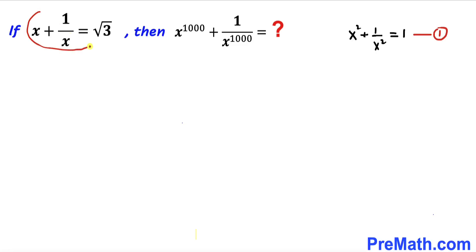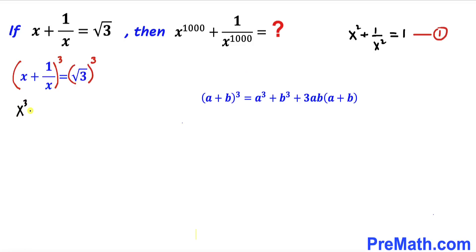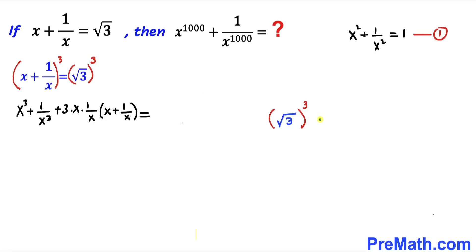Now let's focus on the first equation once again. This time we are going to take the cube on both sides. Recalling the identity (a + b)³ = a³ + b³ + 3ab(a + b), and applying it on the left hand side, we get x³ + 1/x³ + 3 times x times 1/x times (x + 1/x).